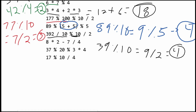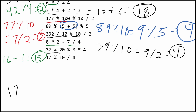Next, we have 8 times 2, which is 16. Then we subtract 7 divided by 4, which is just 1, so we get 15. Then we have 37 modulus 20, which gives us 17. We take the modulus of 17 using 3, which is 2, and we multiply that by 4, giving us the value 8.